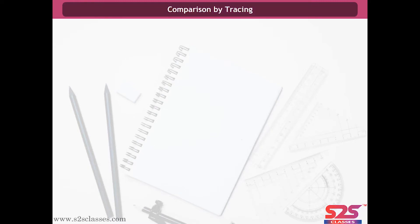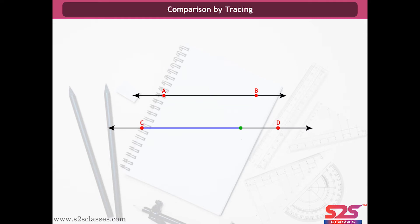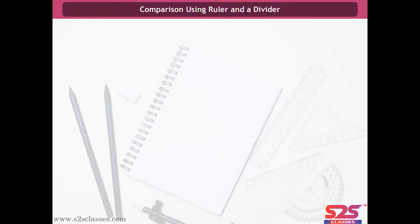Comparison by Tracing. Another method of comparing line segments is by tracing. Using a tracing paper, trace AB and place it on CD. Now we can easily tell that CD is greater than AB. Accuracy of this method depends upon the accuracy of the trace. Also, it is hectic to trace a line segment every time we want to compare it.